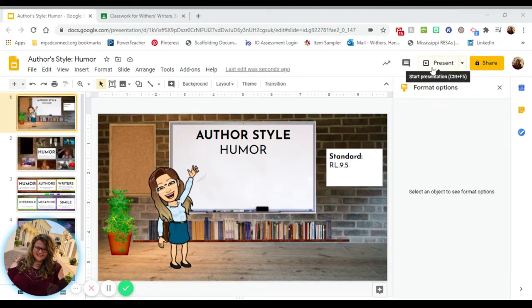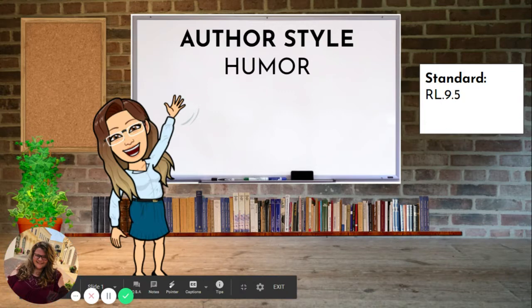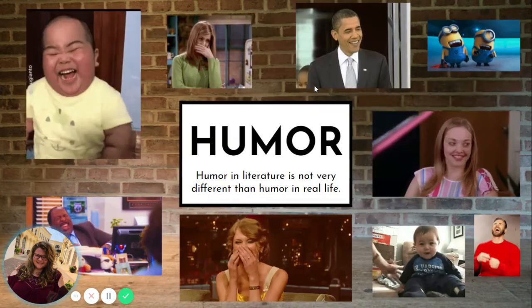Great students. So today we're going to be working on standard reading literature 9.5, which is all about an author's style or an author's structure. Today we'll be focusing on humor because that is what our author uses in her writing today.